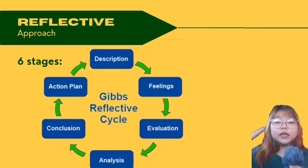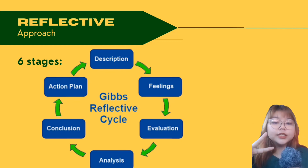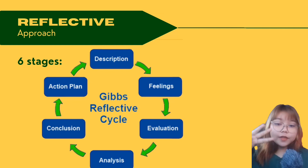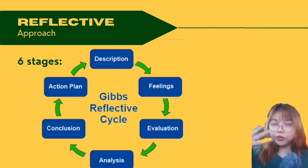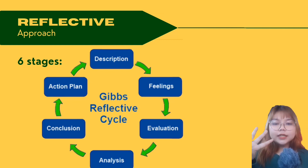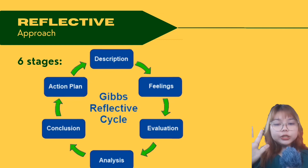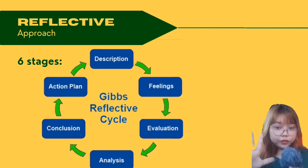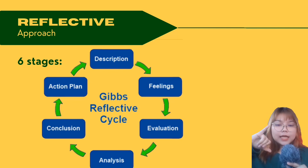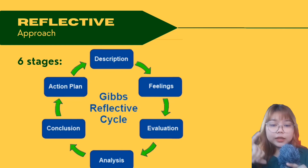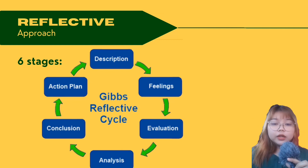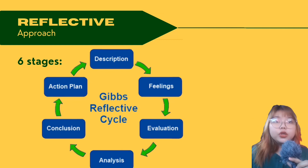The six stages are: first, description of the experience; second, feelings and thoughts about the experience; third, evaluation of the experience — both good and bad; fourth, analysis to make sense of the situation; fifth, conclusion about what you learned and what you could have done differently; and sixth, an action plan for how you would deal with similar situations in the future or general changes you might find appropriate.